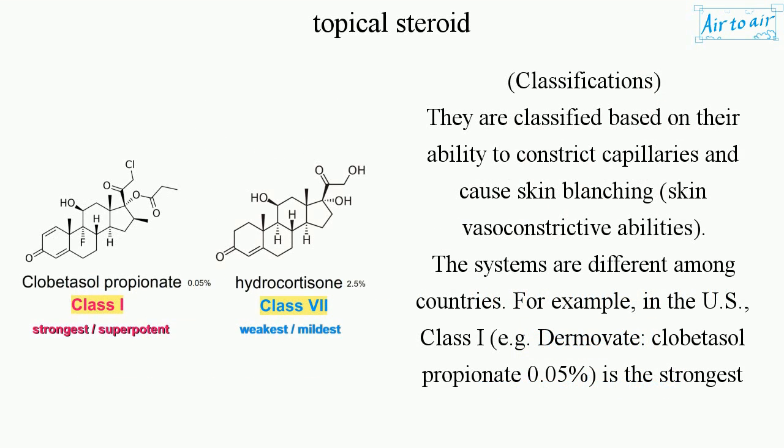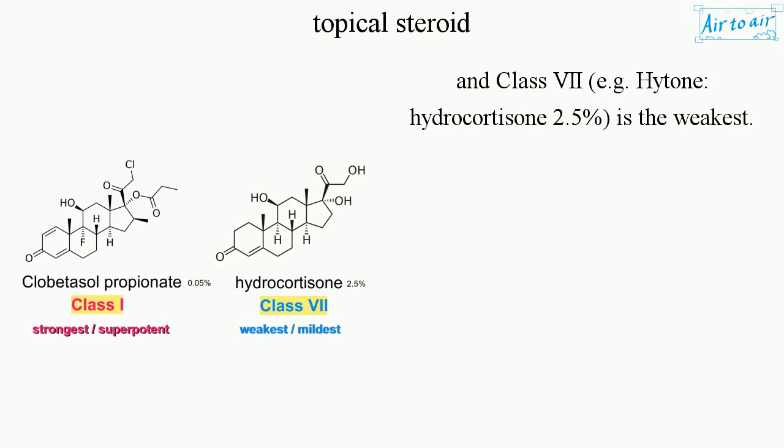Classifications: they are classified based on their ability to constrict capillaries and cause skin blanching — skin vasoconstrictive abilities. The systems differ among countries. For example, in the U.S., class I (e.g., Dermovate — clobetasol propionate 0.05%) is the strongest, and class V (e.g., hydrocortisone 2.5%) is the weakest.